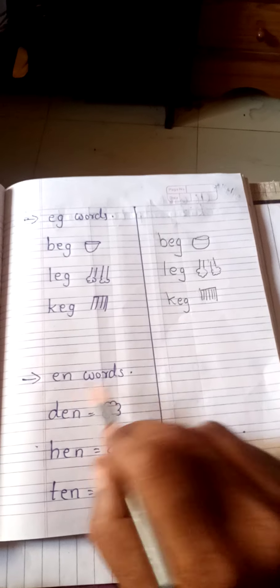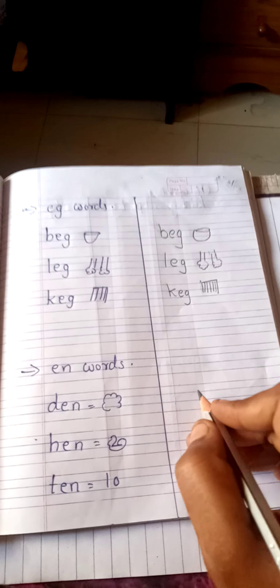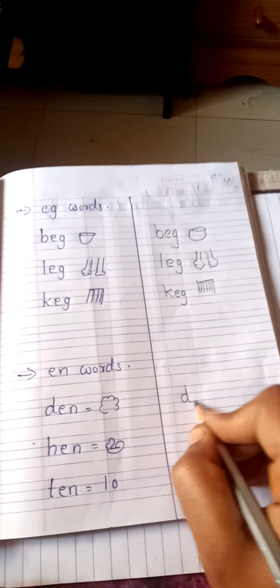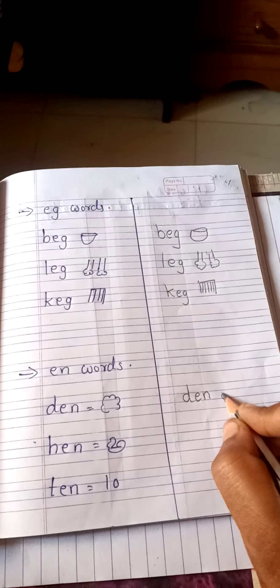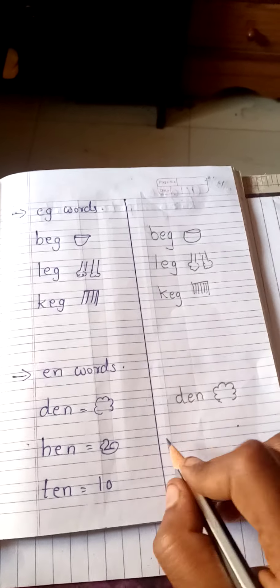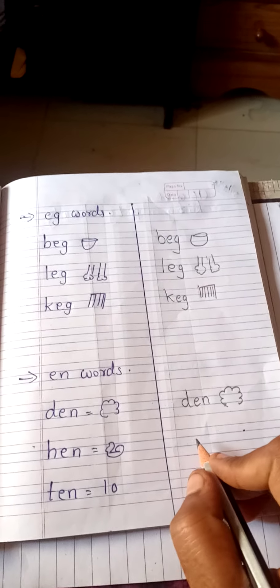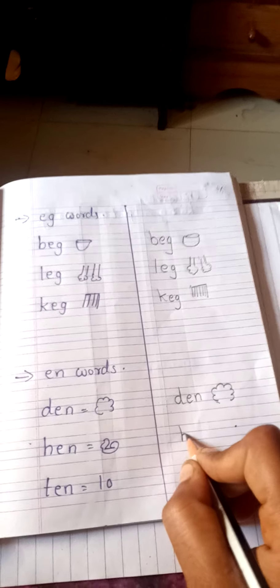Now next, E-N words. So D-E-N, den. Who lives in den? Lion lives in den, yes.